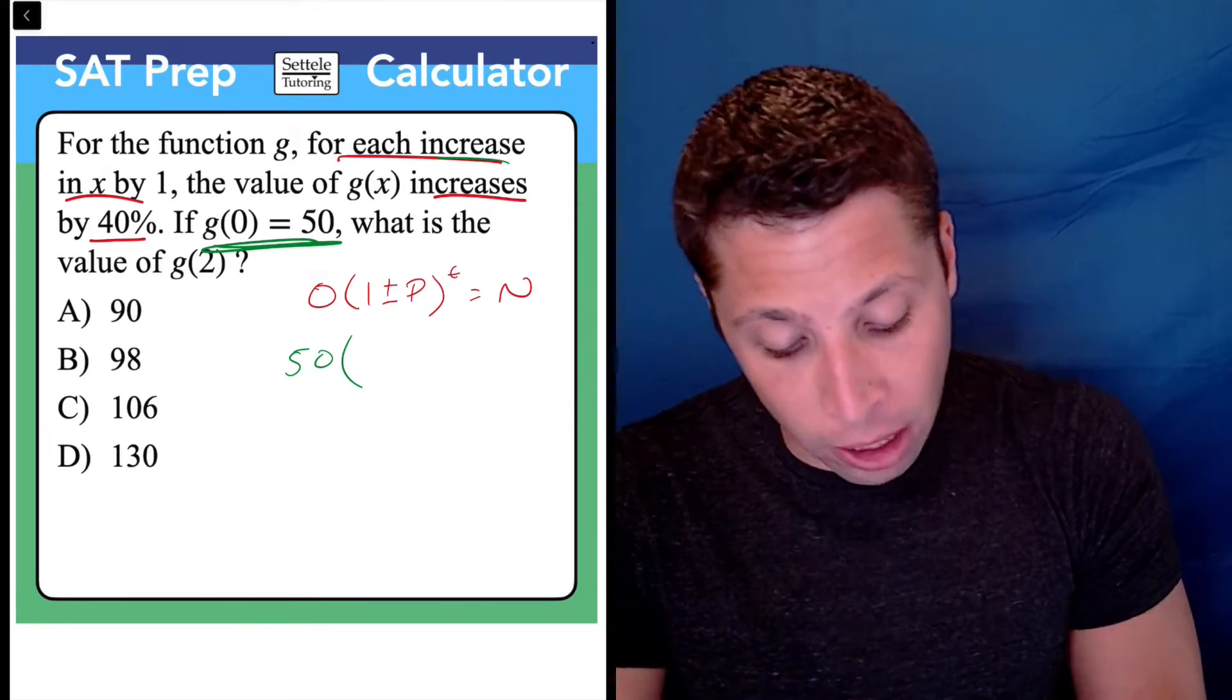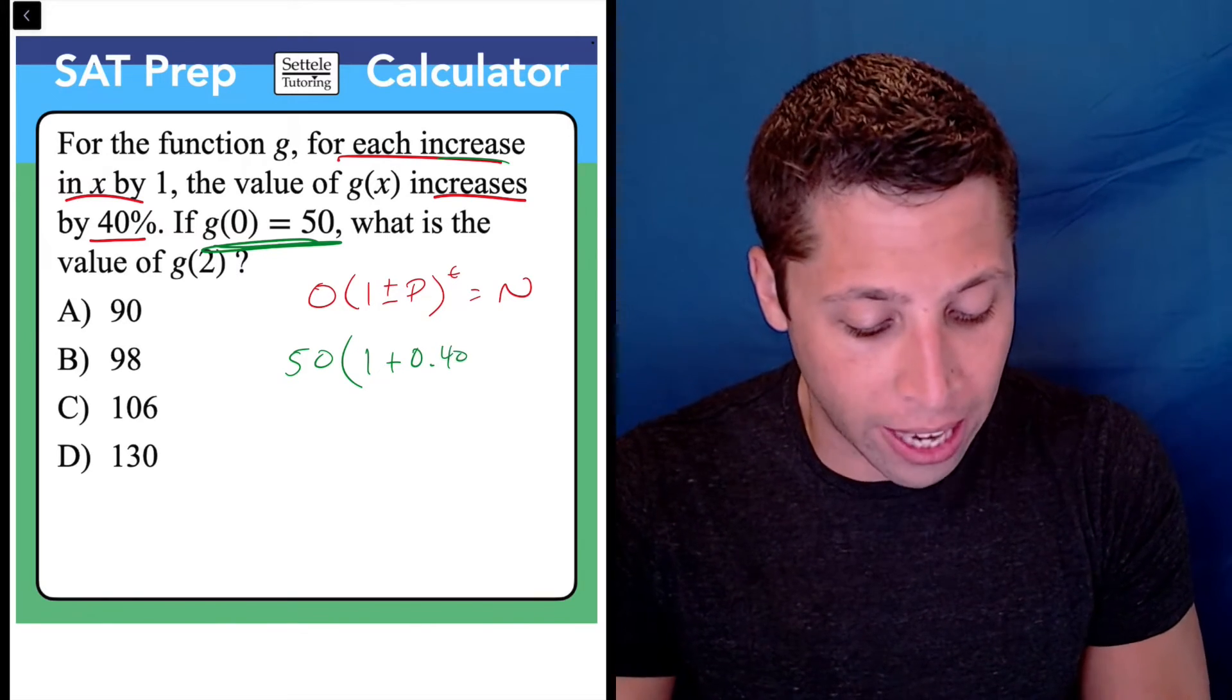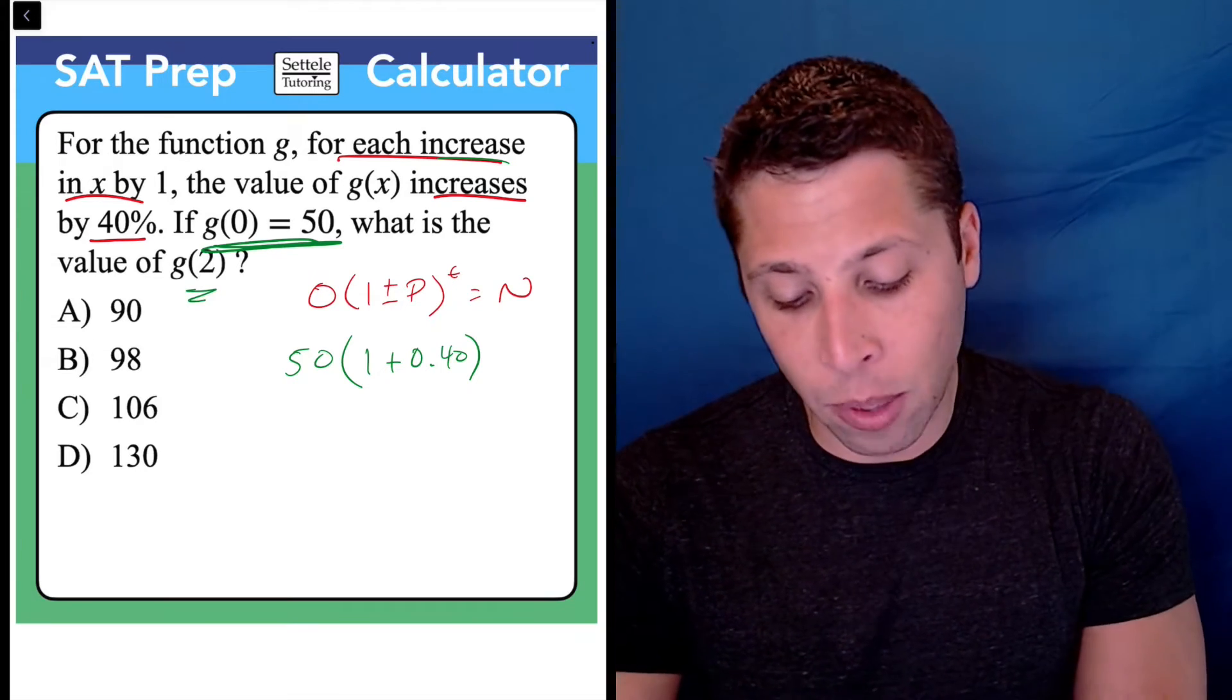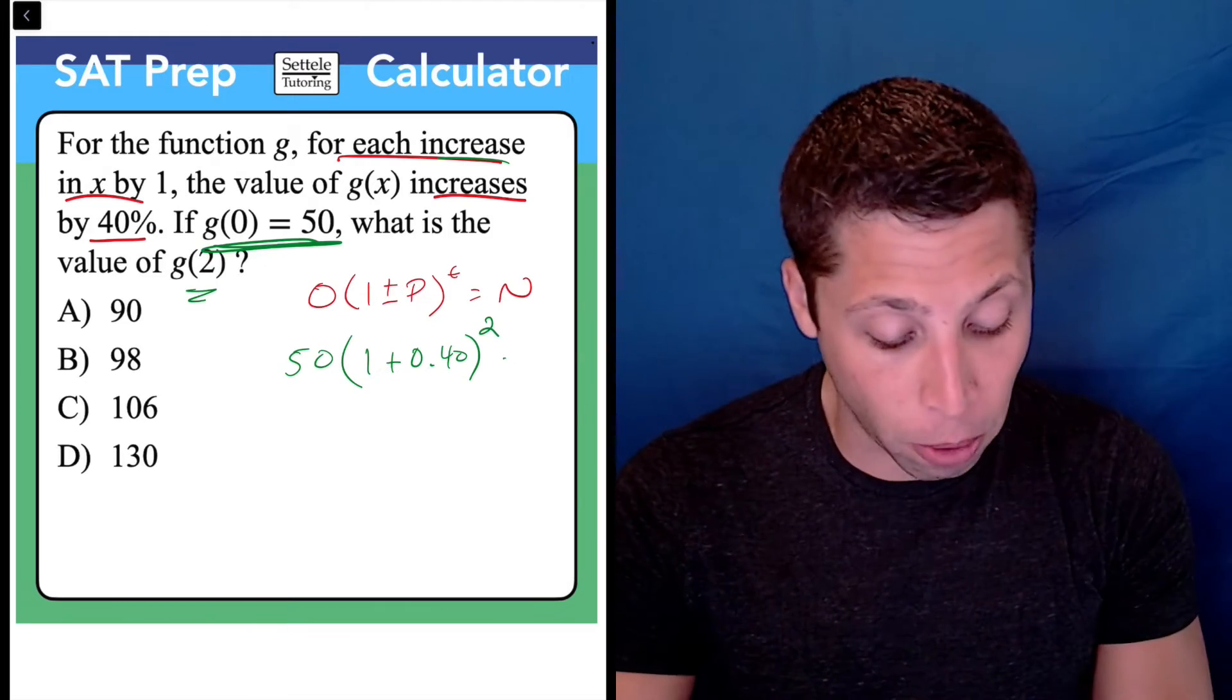Now because they say it's an increase, we're going to have 1 plus, and then our P is 40%, so we write that as a decimal 0.40. Since they're telling us we need to see what happens when x or t is 2, we're going to put that in the top for the exponent.